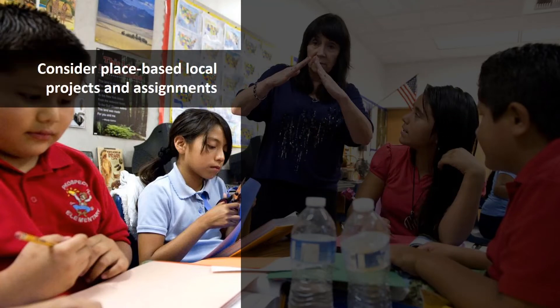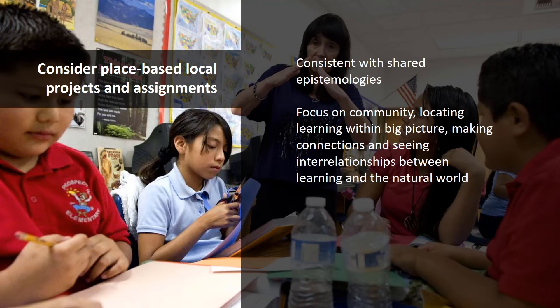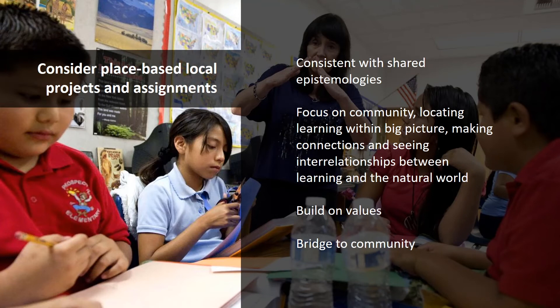In addition to helping students see the utility of their learning, place-based local projects and assignments appeal to a number of elements of shared Native American epistemologies, such as a focus on community, locating learning within the big picture, making connections, and seeing interrelationships between learning and the natural world. Service-oriented projects in the local community strongly build on values connecting to students' sense of responsibility to their community, and can target issues related to the responsible use of power. Such projects can also provide a bridge between schools and Native American communities.